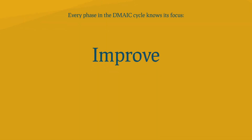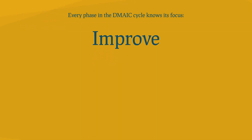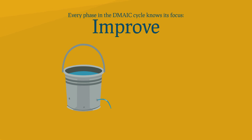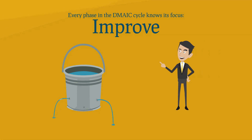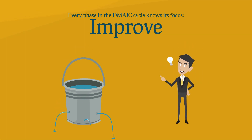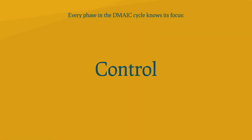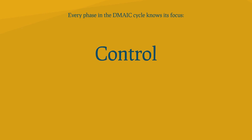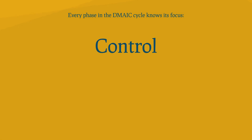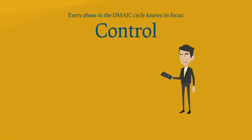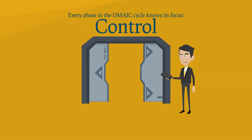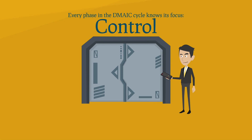Improve: the process is improved. In the improve phase, solutions are designed to solve the problem. Control: people are in control if everything is going well. In the control phase, we invent fail-safe steps to make sure the problem does not occur again.